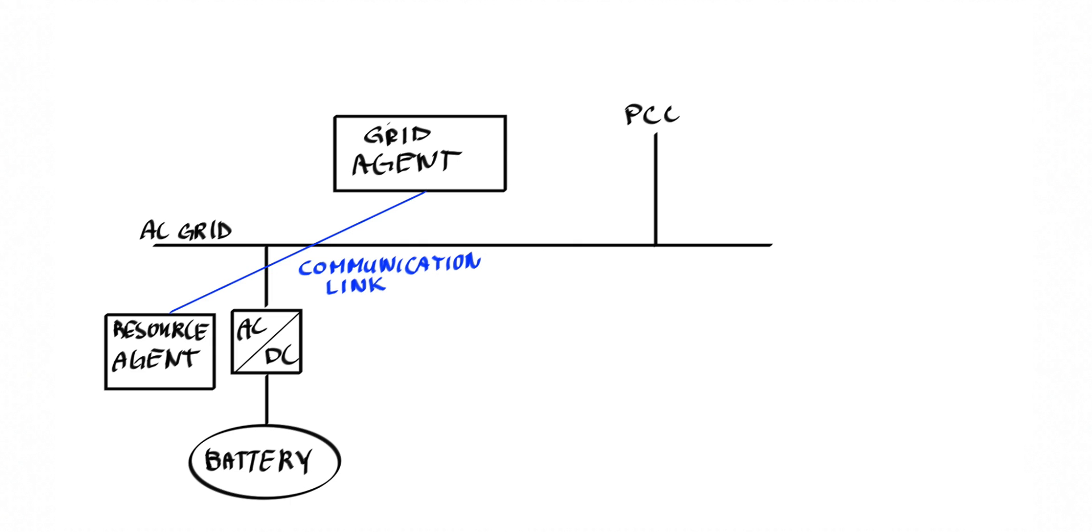COMALAG is built on two principles. The first principle is resource-independent control. Each resource in the grid is equipped with a resource agent. The resource agent performs two tasks: implementing setpoints on the converters, and translating the internal state of the resource into a device-independent message format before sending it to the grid agent. In this way, the grid agent remains generic. It does not have to be tailored to the specific collection of devices that is connected to it.